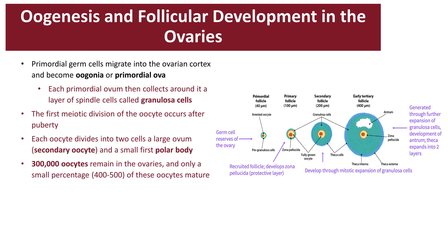There are numerous ovarian follicles in the ovaries. An ovarian follicle consists of an oocyte surrounded by follicular cells. The premature early stages are called the oogonia or the primordial ova. Each of these primordial ova collects around it a layer of cells called the granulosa cells, which have a significant role in regulating and secreting the female sex hormone. During the first mitotic division, each oocyte divides into two — a large cell called the secondary oocyte and a cell that decays called the polar body. About 300,000 oocytes remain in the ovaries after embryonic development, and only a small percentage — between 400 to 500 — ever mature.